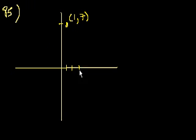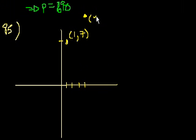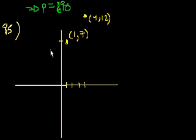4 comma 12 — it might be up here. This is the point that we care about. Let me scroll down. 4 comma 12. If the line looks like that, maybe it goes through, but the line could be like that. So statement number 1 alone isn't enough.